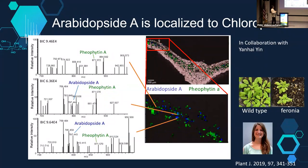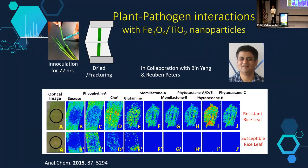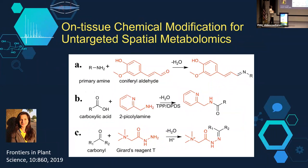In collaboration with Yanhui, we found that arabidopsides known for wounding response are highly enriched in the feronia mutant. From five-micron mass spec imaging, we found they are co-localized with chlorophyll, meaning they are mostly localized in chloroplasts. We can also study plant-pathogen interaction; in collaboration with Bing Yang and Ruben Pryas, they generated mutant rice that produce momilactone and phytocassane to fight bacteria, and these compounds are only localized to the infected site.